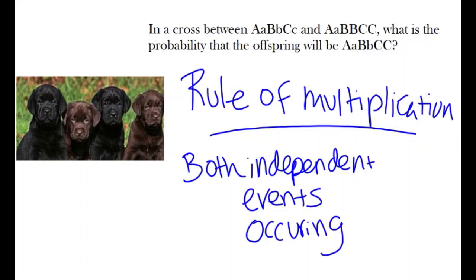The rule of multiplication tells us that for independent events, the probability of both occurring can be calculated by multiplying their probabilities. To know whether or not we should use this rule is if there is the word AND in the question.